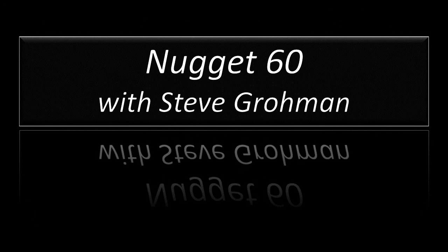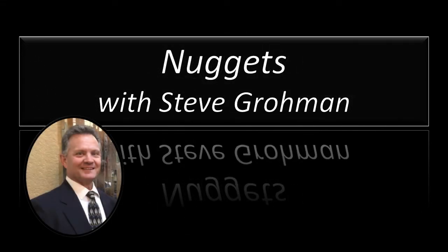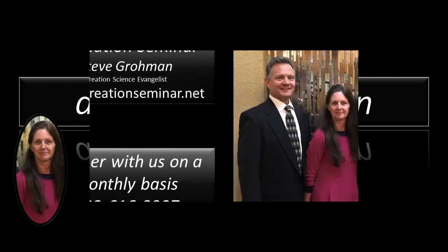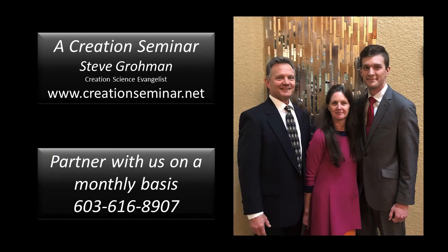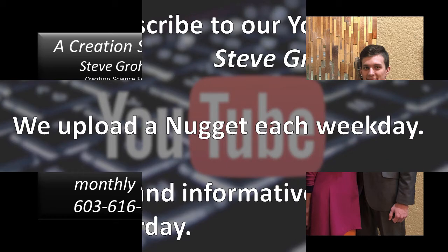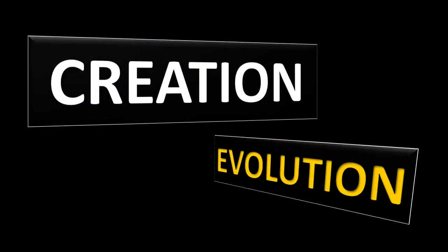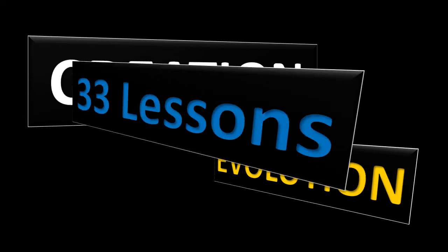Welcome to Nugget 60 with Steve Grohman. This is our 60th nugget. What we wanted to do in this nugget is tell you about the previous nuggets. Many of you are new subscribers or have only watched a few of the nuggets, but we want to encourage you to go back. There is a wealth of information. Of the 60 lessons, 33 are specifically about creation, and I want to go over those today so you can go and look back at these nuggets.